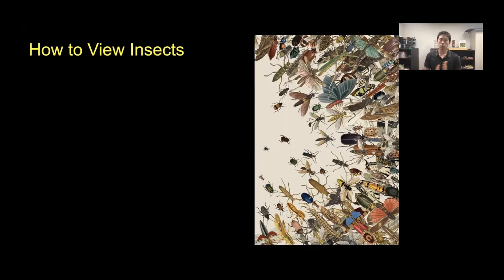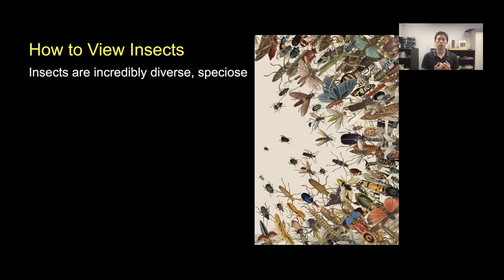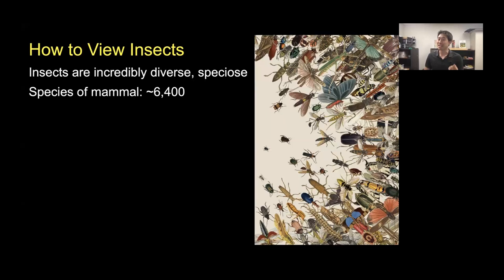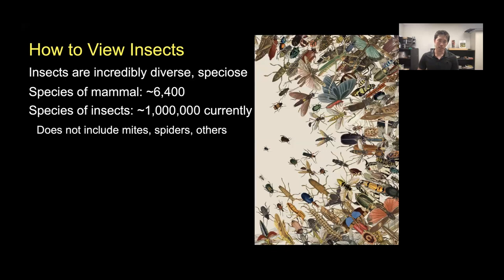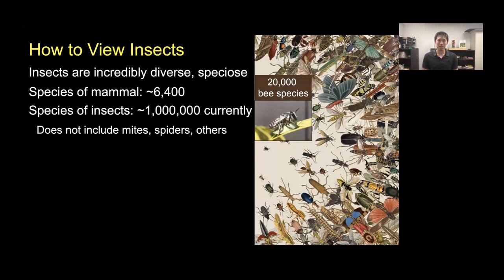When talking about how to view insects, it's important to note that insects are incredibly diverse and numerous. There are about 6,400 described species of mammals, but about 1 million currently described species of insects—not including mites, spiders, millipedes, or centipedes. We are outnumbered hugely, both in species diversity and abundance. There are about 20,000 species of bees worldwide—roughly three times as many bee species as all mammals on the planet.